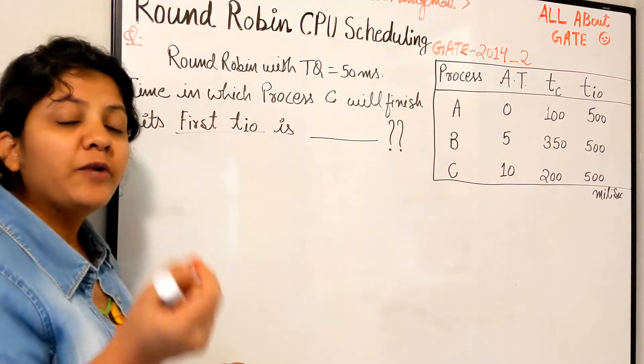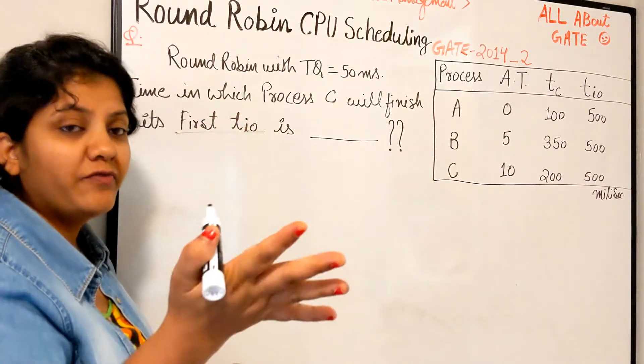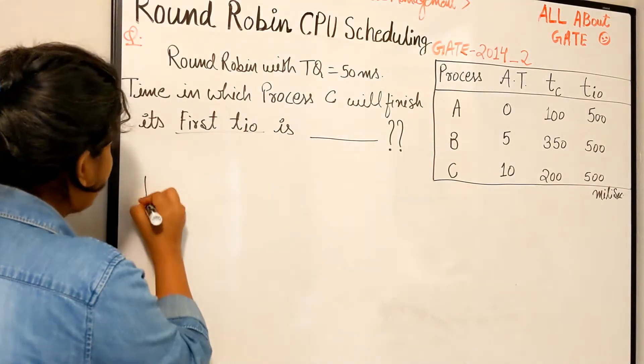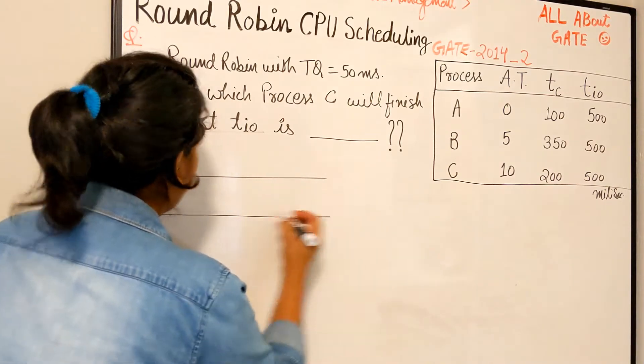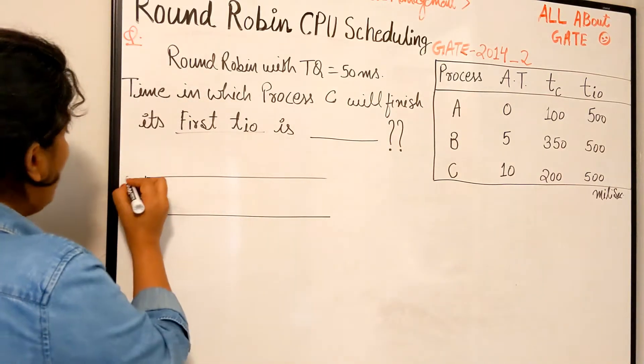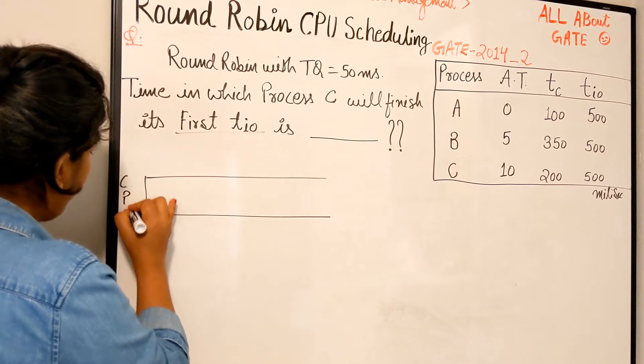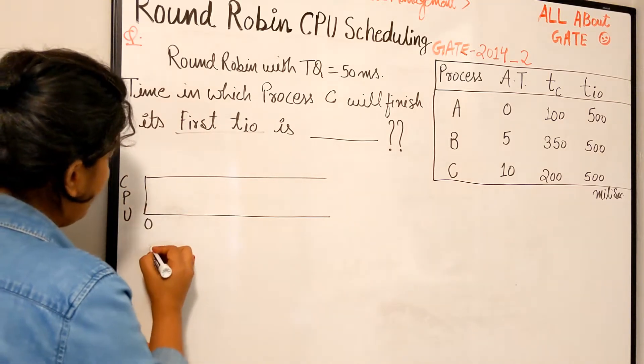What is the time when the input-output operation of C will be finished? It's nothing but a very simple round robin CPU scheduling where you have to schedule on the CPU.